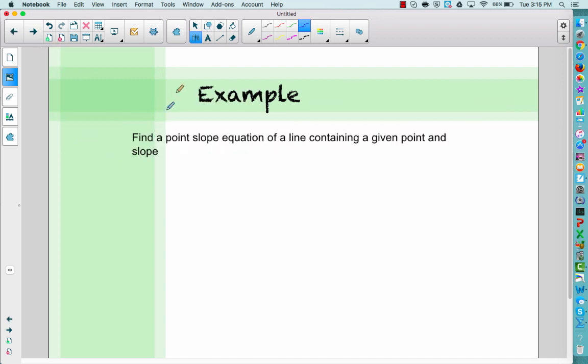So our example: Find a point-slope equation. So I'm already telling you I want you to use point-slope. Find a point-slope equation of a line containing a given point and having a slope. So we're going to give you a point (4, -3), and we're going to say the slope, or m, is -1.